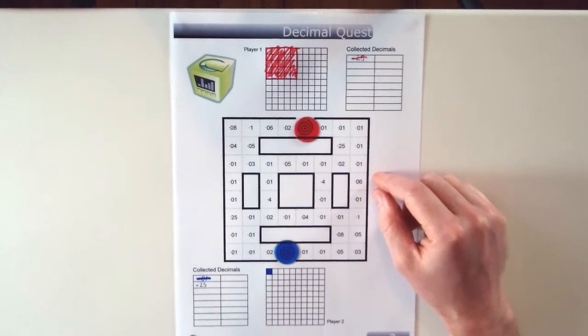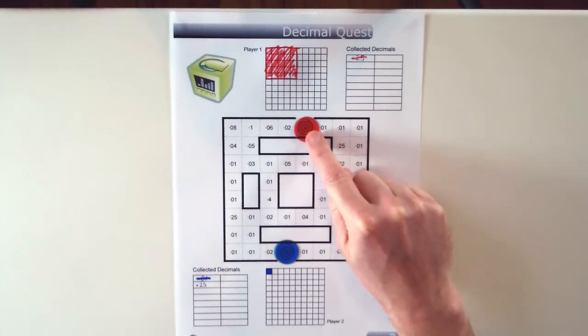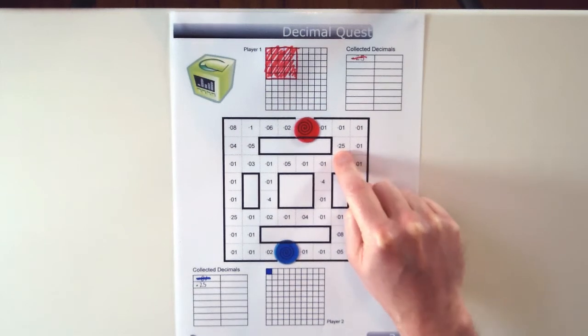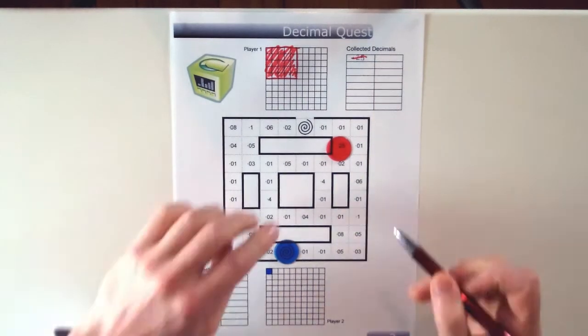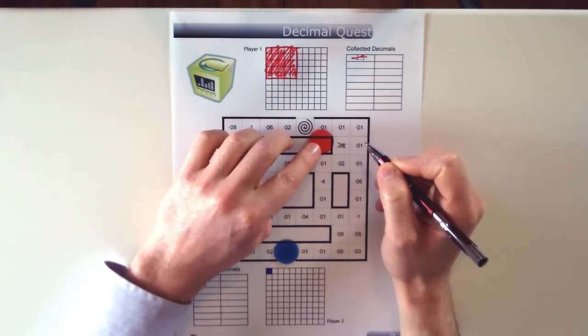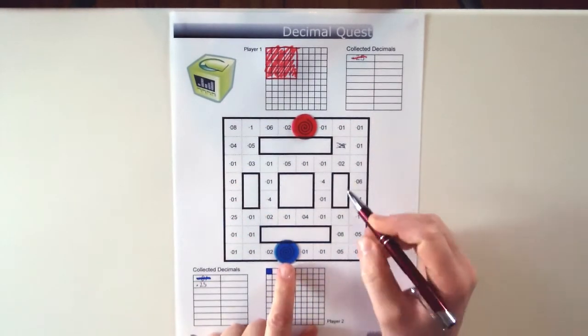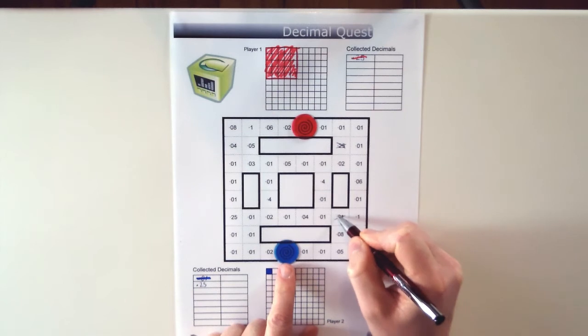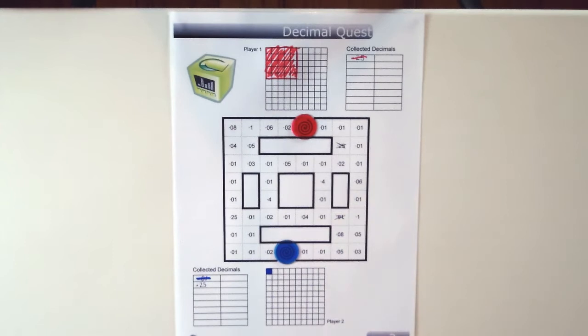Now also I just forgot to mention, when a player collects a decimal, for example red just collected 0.25, as soon as they land on the decimal and write it in their collected decimals area, they also have to cross it out. So that decimal can't be collected again. And blue collected 0.01, so again, neither player will be able to go back to that decimal and collect it.